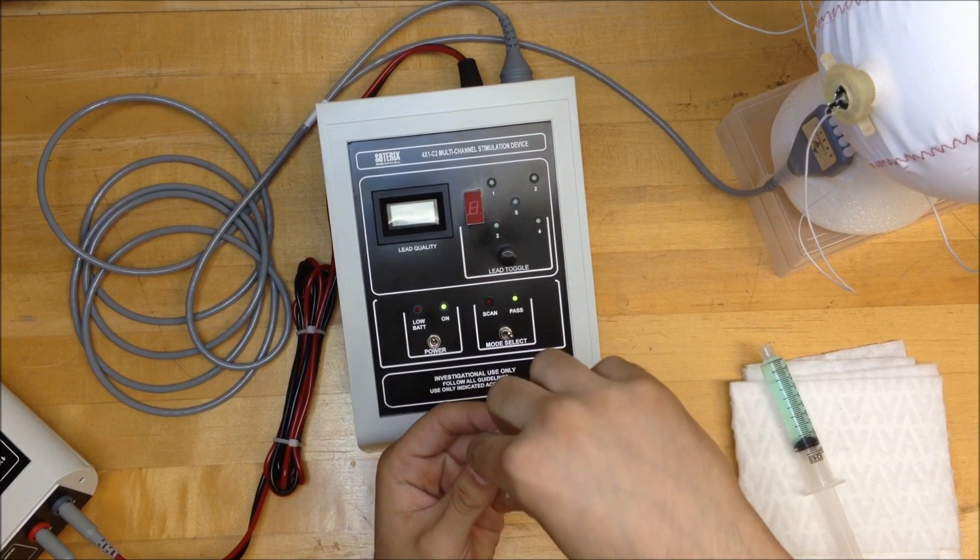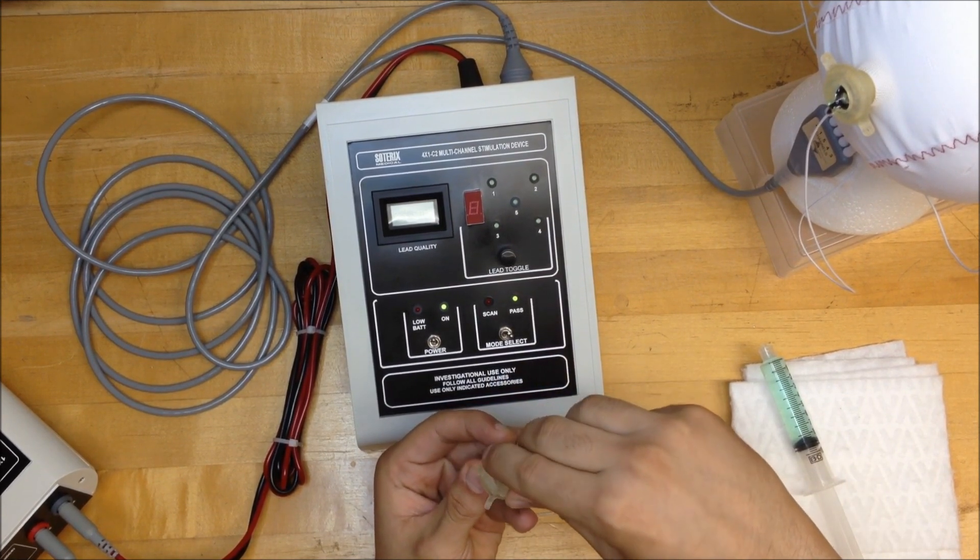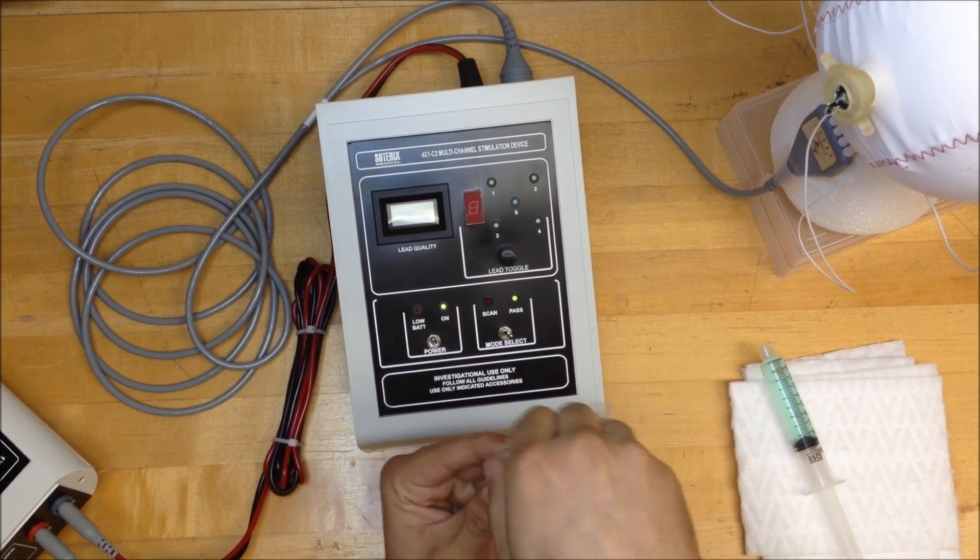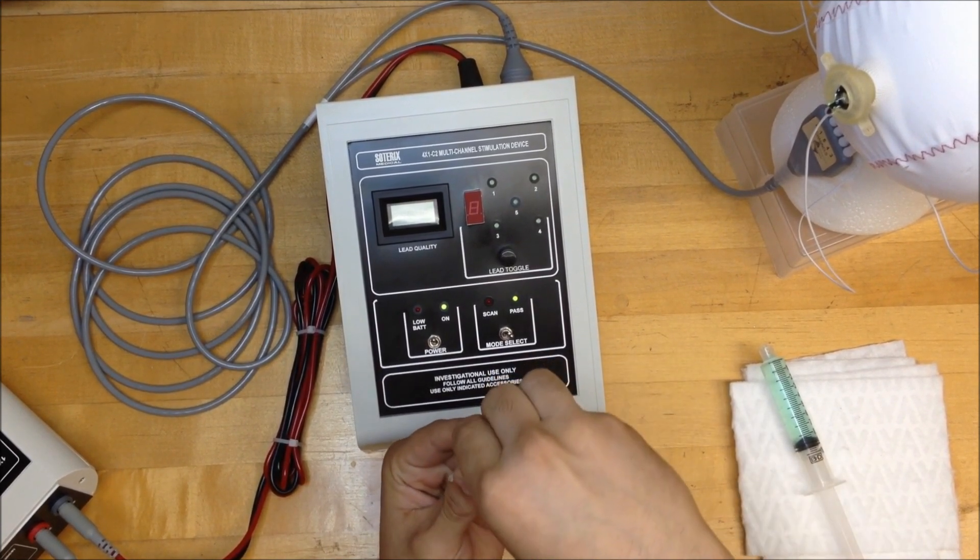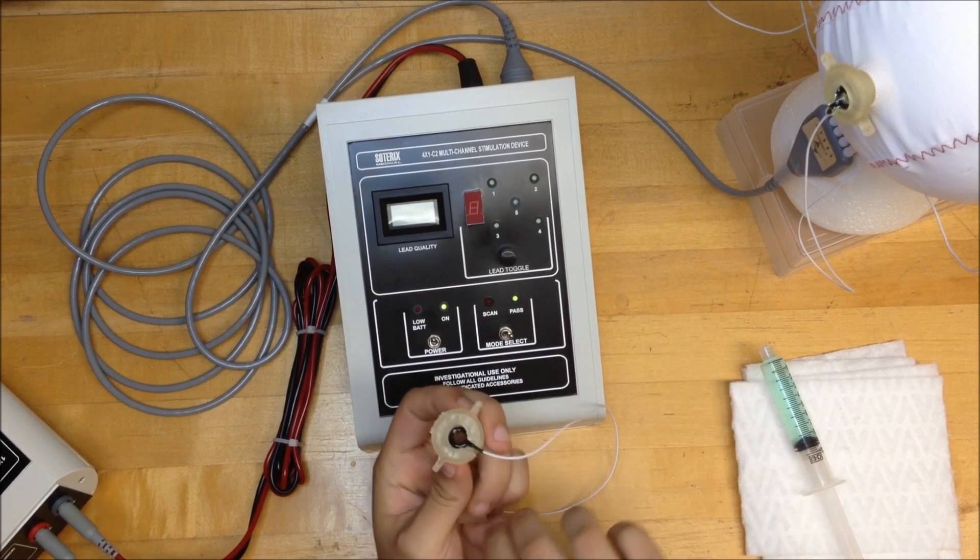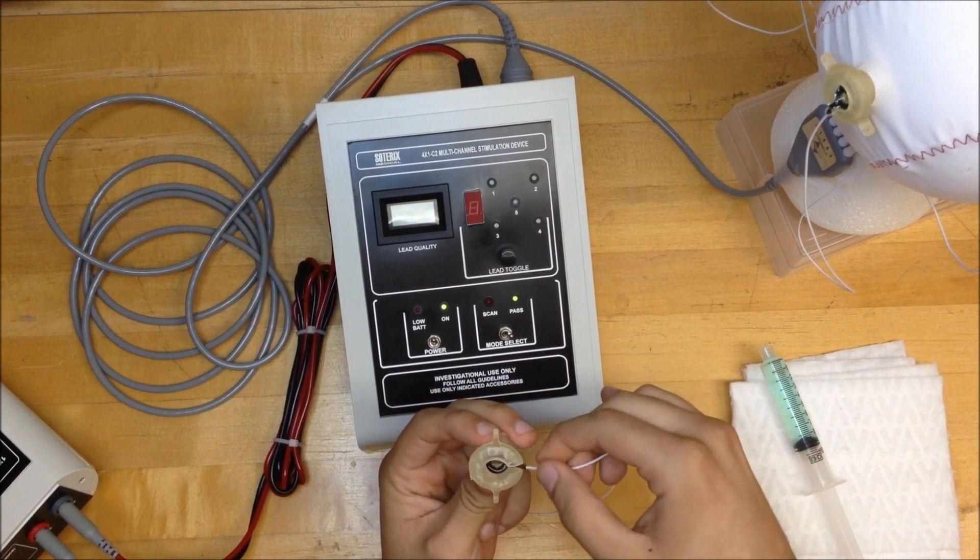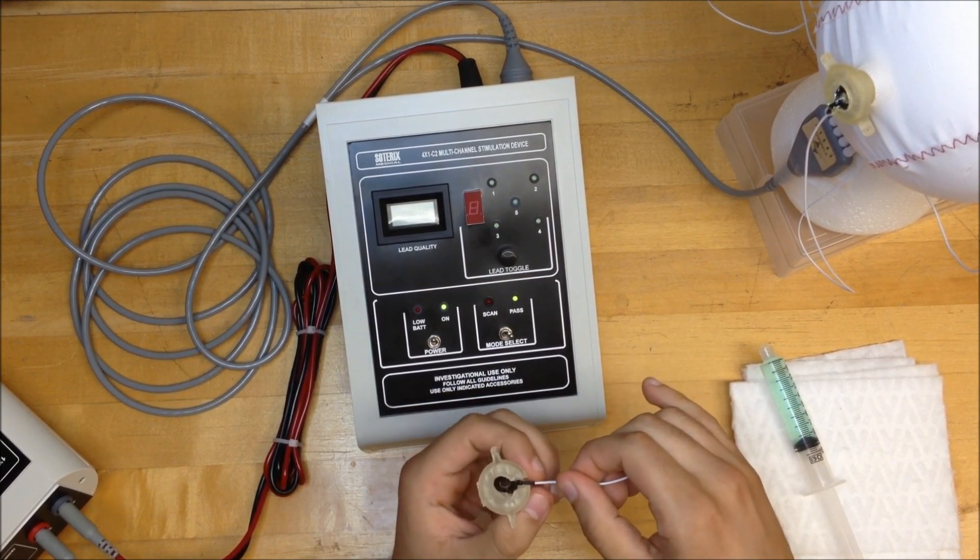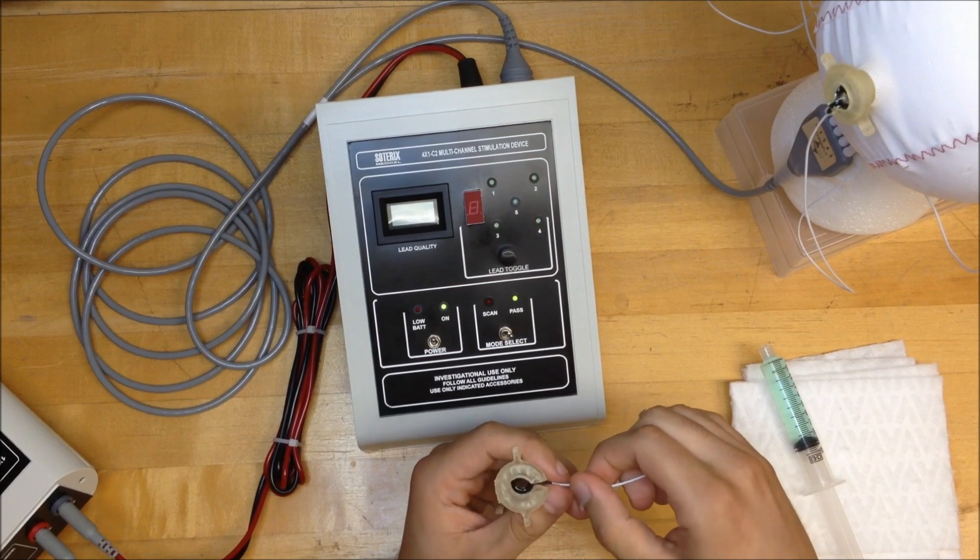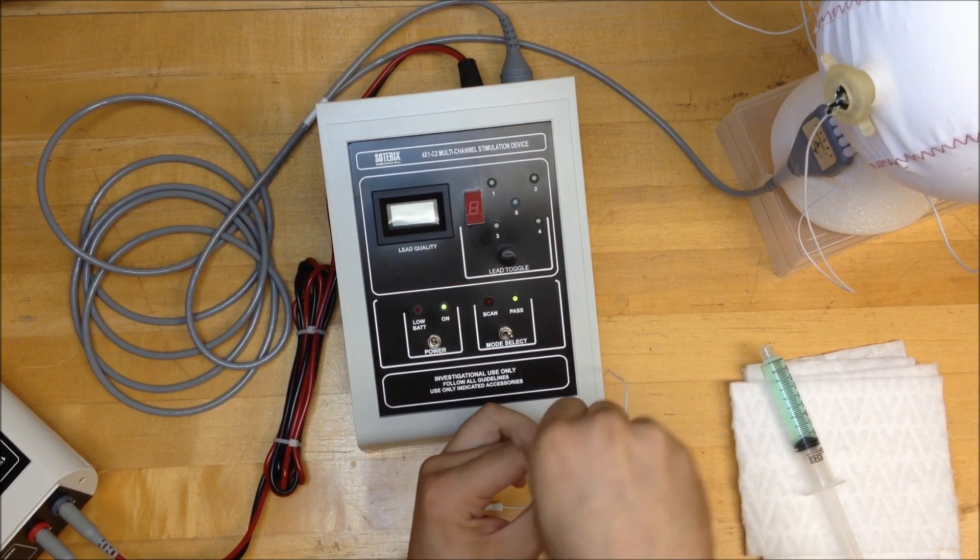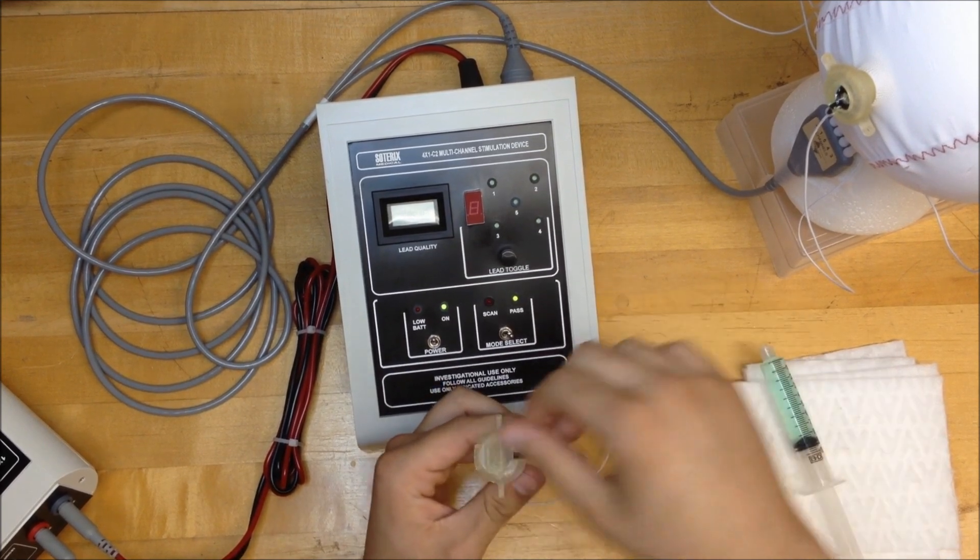If it doesn't rotate, that means the ring electrode is not inserted properly. You have to take it out and make sure it is inserted correctly. You have to take multiple trials before you get this right. If it rotates, then it is sitting properly.